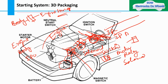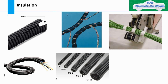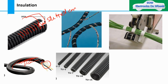Now moving to the insulation types I mentioned - this is the slitted corrugated tube. You can see it is open here - you can see the wires and it is already cut, so you can take your wire out of this easily. But when it comes to non-slitted, it would not be open - it would be closed. I hope you got the point about the difference between slitted and non-slitted.